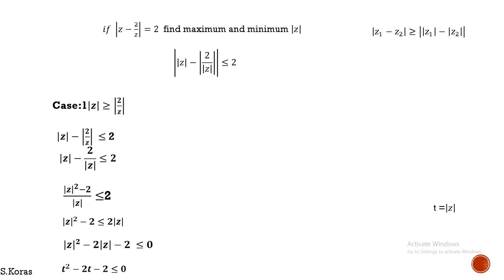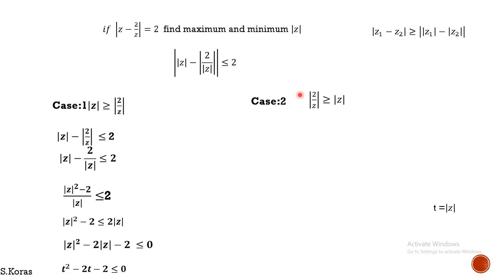Now for Case 2: if this part is smaller and this part is bigger, the result inside the absolute value is negative. When it comes out of the absolute value it must be positive, so to convert negative 1 to positive 1, we add a minus sign in front.